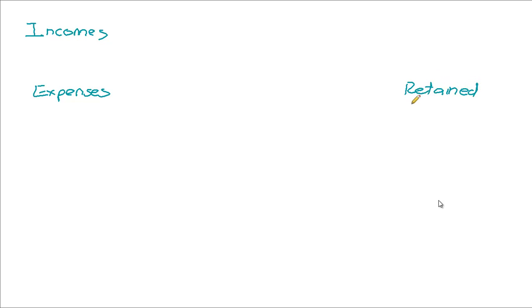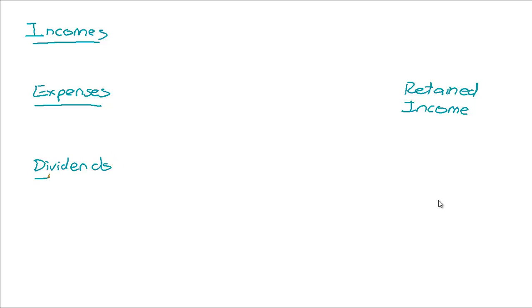In the previous video we learned that the purpose of the closing transfers is to transfer incomes and expenses from the income statement and include them in a specific place in the balance sheet known as retained income. Now, we're going to close off all our incomes and expenses, and in addition, specifically for companies, we're going to close off any dividends distributed and any income tax paid. Income tax can be regarded as an expense, and dividends is not specifically regarded as an expense but rather as a distribution of equity — so we regard it as a negative equity.